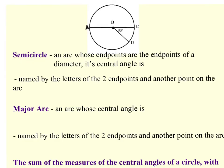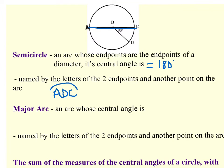A semicircle is an arc whose endpoints are the endpoints of a diameter. Its central angle is equal to 180 degrees. In this picture, the diameter is AC, so I have two semicircles — one up here and one down here, both named AC. But since it's named by two endpoints, you also have to include another point on the arc. So the bottom semicircle would be named ADC, and if I add a point F on the top, that semicircle would be called AFC. Notice how you put the arc symbol over those letters.